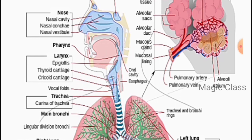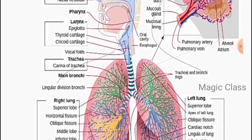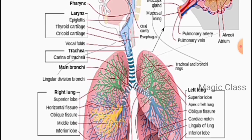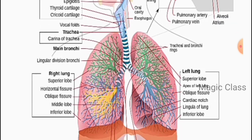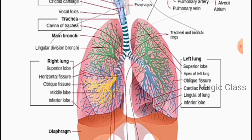Between the pharynx and the trachea, there is a small air passage called the larynx. The larynx is called the voice box. In the larynx, folds of tissue vibrate with the passage of air to produce sound. As shown in the diagram, air passes through the larynx on its way down.